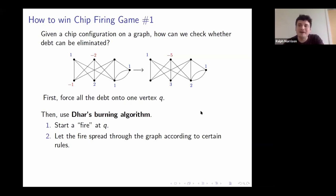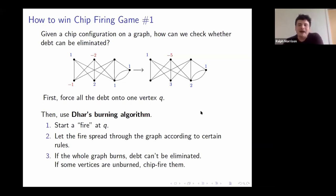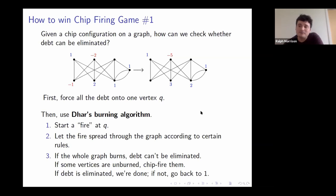Then we use an algorithm called Dhar's burning algorithm, developed around 1990 for studying related problems. We start a fire at Q — think of Q as very flammable, so we light it on fire. The fire spreads throughout the graph according to certain rules: edges touching a burning vertex also catch fire. The chips on a vertex can protect it — think of each chip as a firefighter fighting off an incoming flame. The rule is: if you have as many chips as there are incoming burning edges, you're safe. If you have more burning edges than chips, that vertex burns.